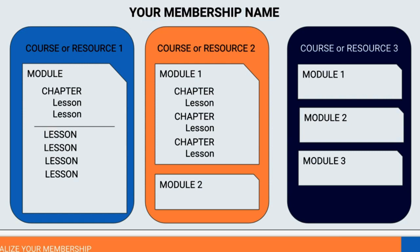Inside the course, there has to be at least one module. The module then can hold two kinds of items: it can hold a chapter, which holds lessons, or it can just go directly to lessons. A lesson is where the content lives — every time you want to deliver content, it goes in the lesson. Sometimes you don't have this additional breakdown of chapters. It's like the old outlining principle: if you have outline one and then subheading A with only one subheading, you don't need that subheading because there's no breakdown. That's the same thing with courses.